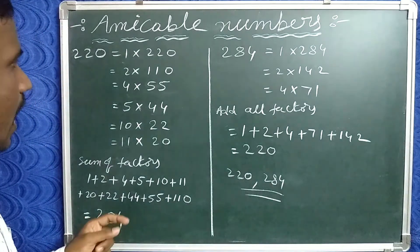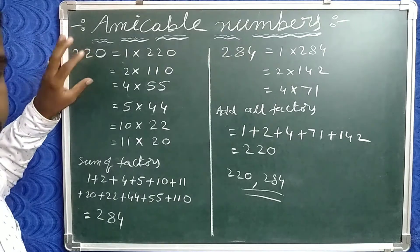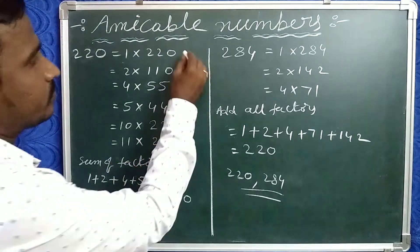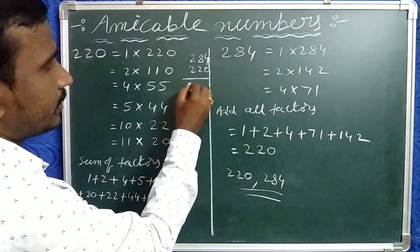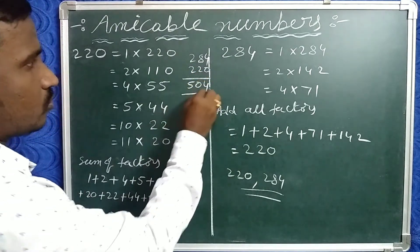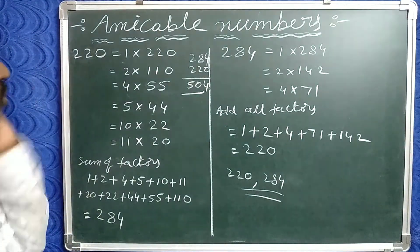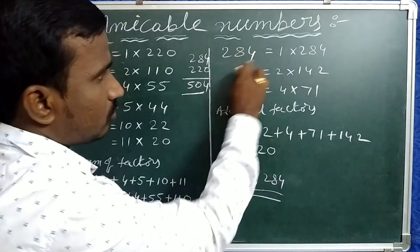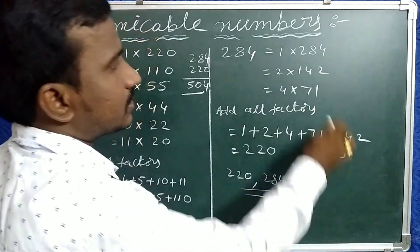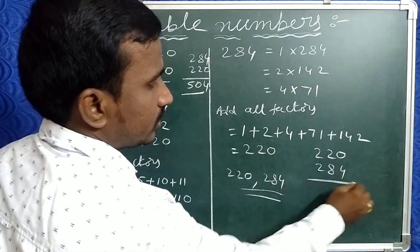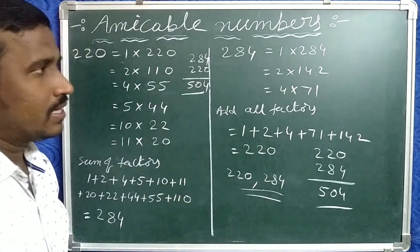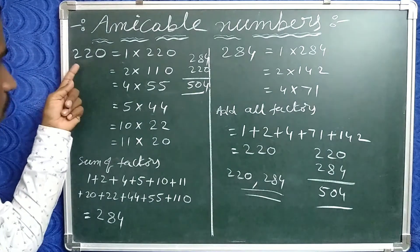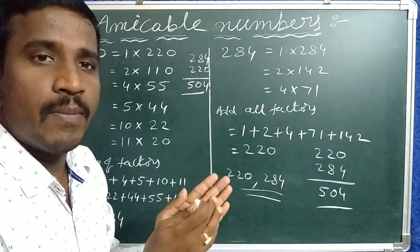If we add all factors of 220 including itself — that is 284 (sum except itself) plus 220 — we get 504. Similarly, all factors of 284 except itself give 220, and adding 284 itself also gives 504. Therefore the sum of all factors of 284 equals the sum of all factors of 220, which is why these two numbers are called amicable numbers.